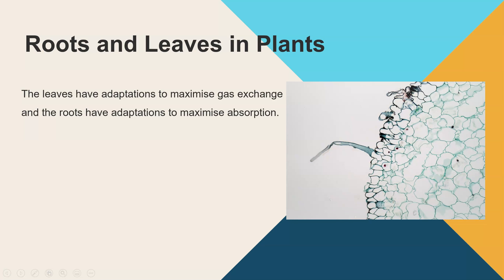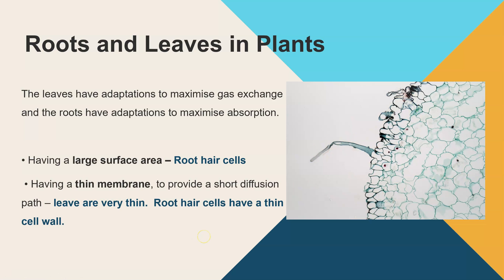Roots and leaves in plants also have exchange surfaces. Leaves exchange gases and roots absorb water and mineral ions. Both have a large surface area: roots have root hair cells with long projections coming out of the cell to increase surface area, and leaves are very thin with a thin membrane in the root hair cells to reduce the diffusion pathway and allow efficient gas exchange. These are the adaptations that multicellular organisms have on their exchange surfaces or organs to ensure they can meet the demands of the organism.